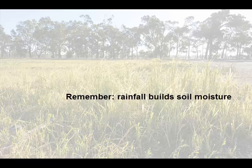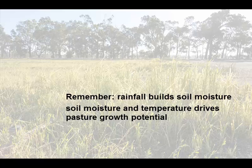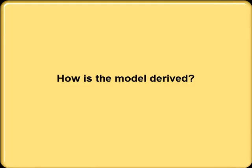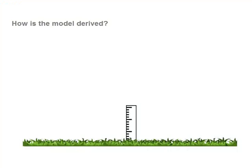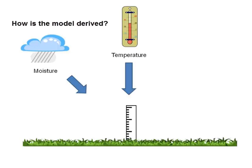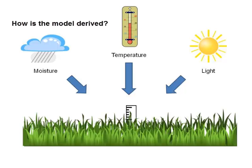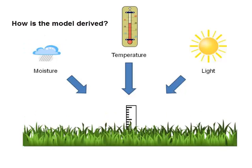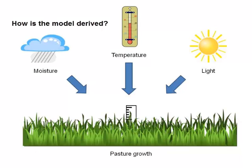Remember, rainfall builds soil moisture. Soil moisture and temperature drive pasture growth potential, which is the basis of animal productivity. The tool uses computer modelling based on rainfall and soil moisture, temperature records and other variables such as sunlight and evaporation, to estimate the extent of pasture growth. It looks at recent conditions in your area, compares them to conditions in previous years, and uses that information to predict the amount of pasture growth you would expect to see in the months ahead.